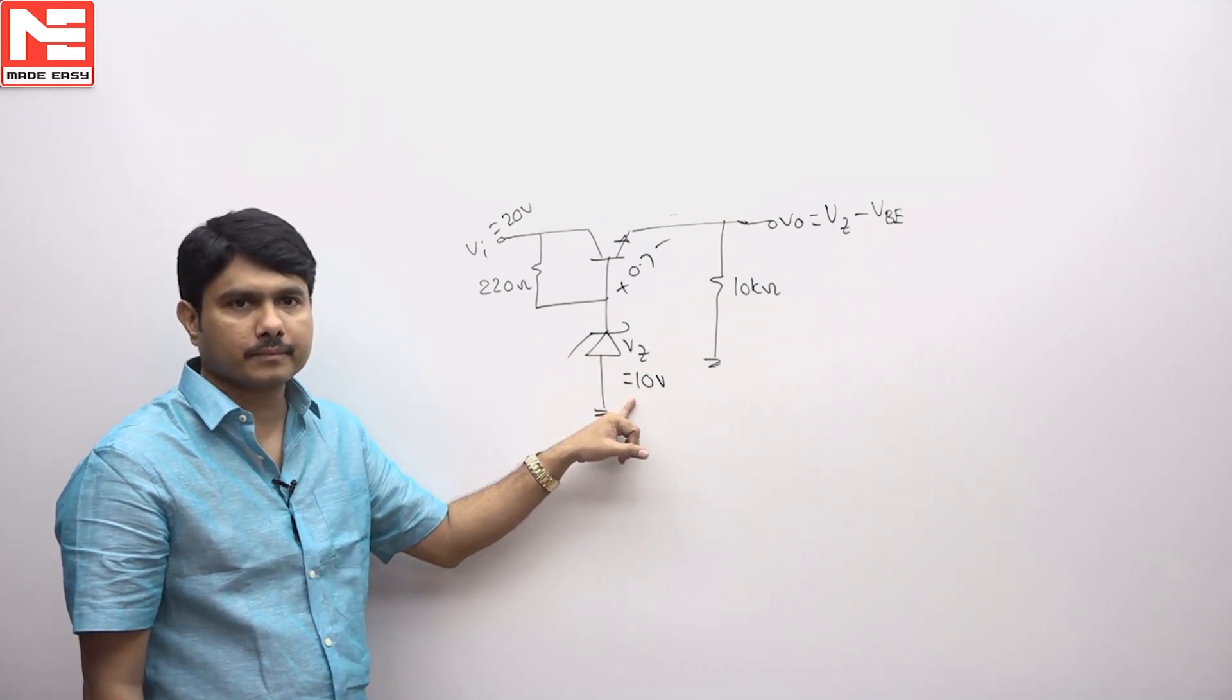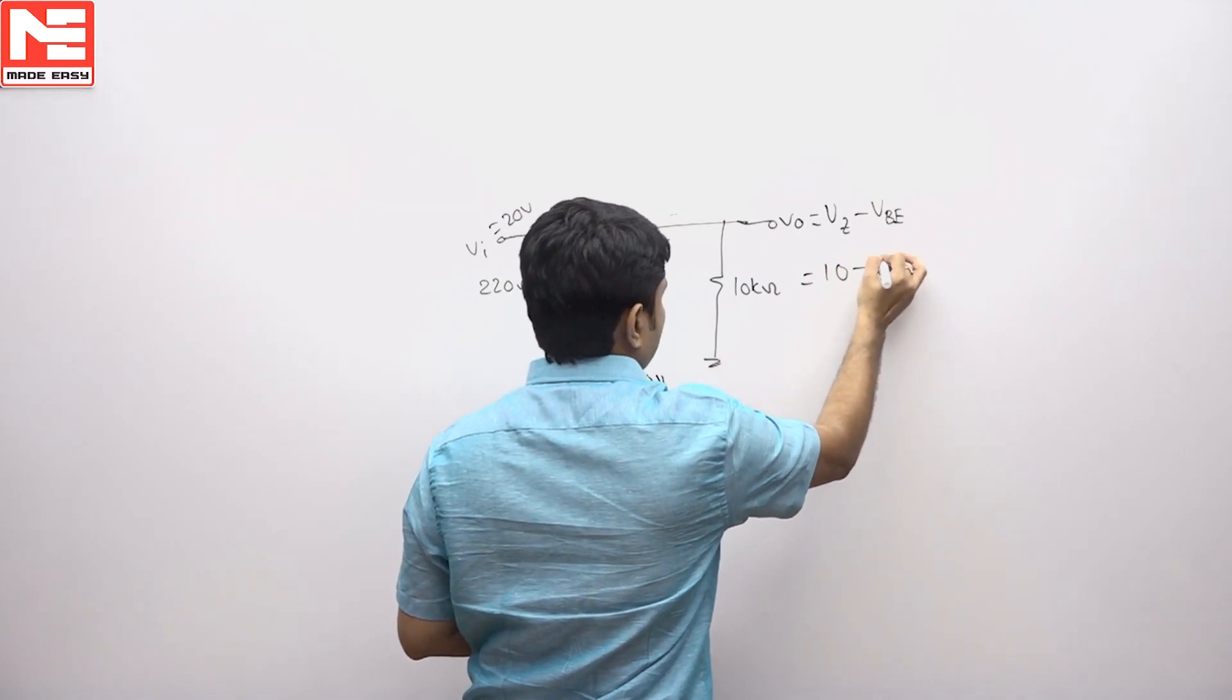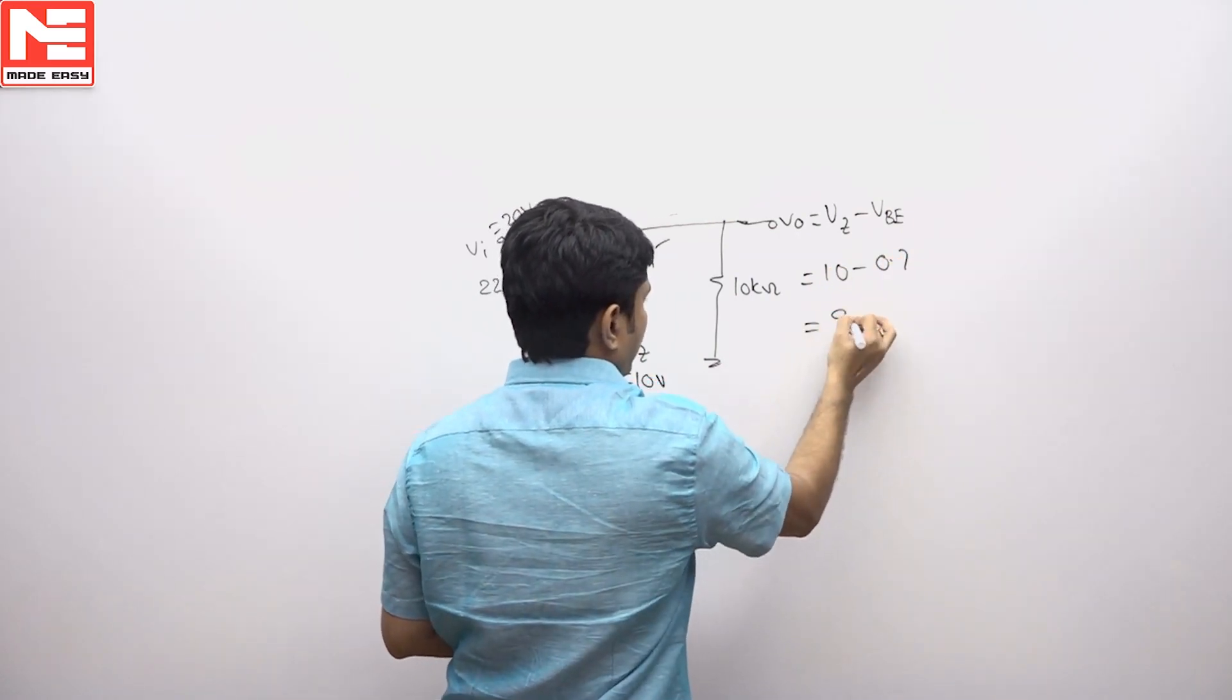So Vz is given as 10 volts, your Vb is 0.7, so 10 minus 0.7, therefore 9.3 volts.